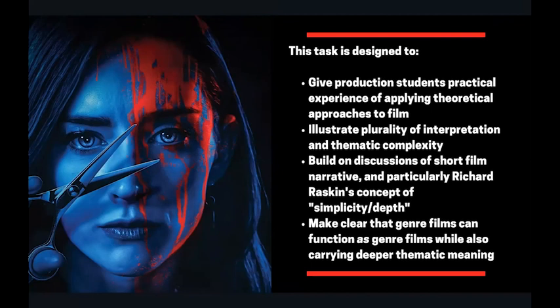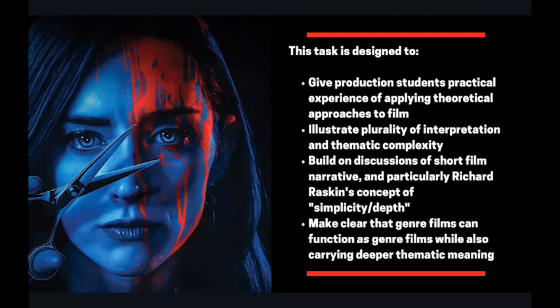The interesting thing about this task using a 13-minute film is that students often use the same evidence to support different arguments, simply interpreting that evidence differently. The formalist group usually concludes that the film is thematically complex and needs to be seen as an effective horror film that is also a comment on class and gender. On a basic level this task gives production students practical experience analyzing a film through a theoretical lens. It also illustrates plural interpretation — that great films are rarely about just one thing — builds on Richard Raskin's idea that short films are driven by simplicity and depth, and makes clear that genre films can carry deeper thematic meaning.